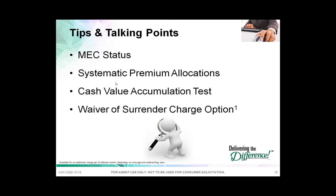Another benefit is our systematic premium allocation. A lot of times you don't want one starting point and one ending point, so this feature takes the lump sum — in this case $200,000 — and spreads it out into 12 equal premium payments, giving you 12 starting points and a dollar cost averaging effect on an annual basis. Previously you could have put 100% of the money into the fixed account and called in each month to move it into the index bucket — now we just do it for you automatically.